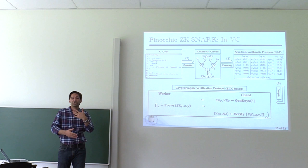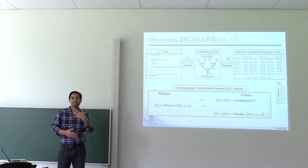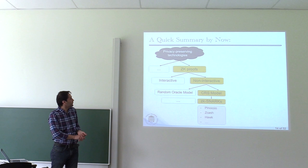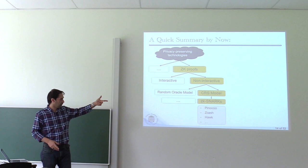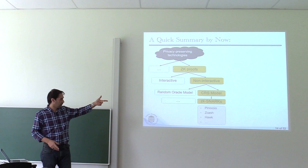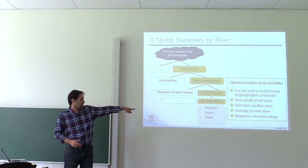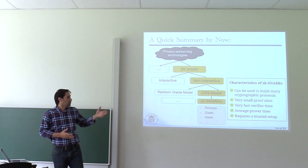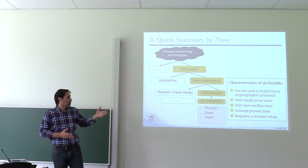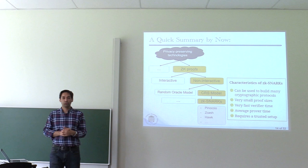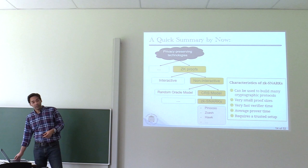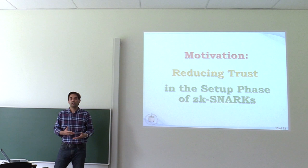That was a quick summary of zero-knowledge proofs, non-interactive cases, the CRS model, and SNARKs as a particular case of NIZKs in the CRS model. But one big problem with SNARKs is the last item: they require a trusted setup. Everything is fine with proof generation — proofs are very succinct and the verifier can check them in milliseconds — but there is this trust problem where you need to trust some third party. One motivation for my research was how we can decrease this trust.